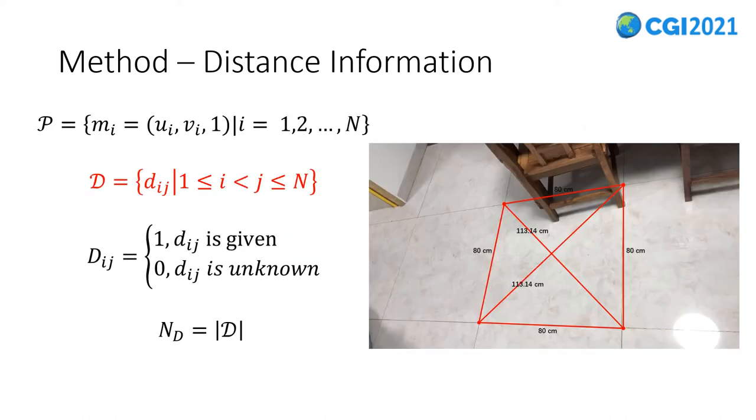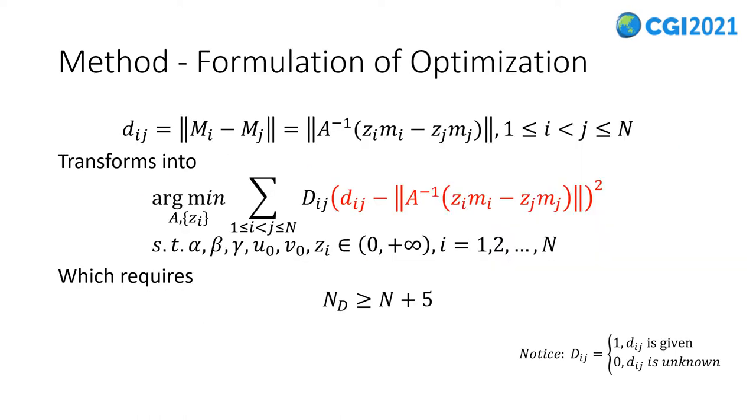We use the distance information to estimate the intrinsic of the camera model. The distance information is the distance between mark points in the 3D space. As shown in the figure, we label four points and give some of the distance between them. We use a capital Dij to indicate whether the distance between two points is given or not. And D is used to indicate the number of distances given.